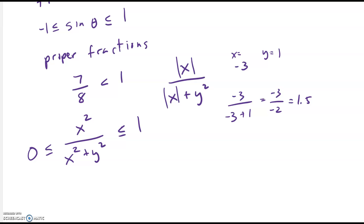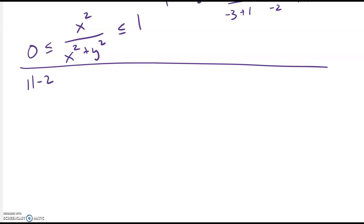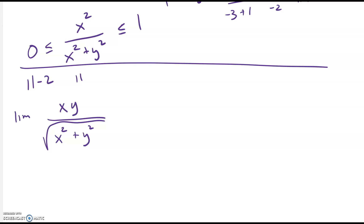Let's do an example — question 11, section 11.2. We have the function xy divided by the square root of x squared plus y squared. The denominator is always positive, but the numerator can be negative, so we have to be careful. We want to show the limit as (x, y) approaches (0, 0) of this function equals zero. I just want to show you how to use the squeeze theorem, so assuming it's equal to zero, let's show that the answer is indeed zero.